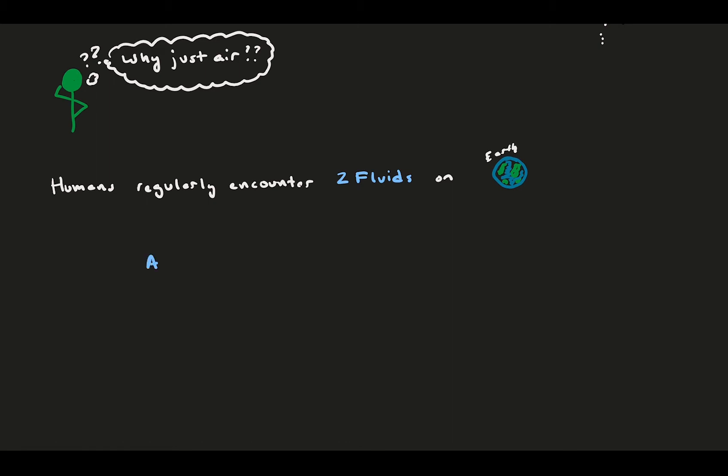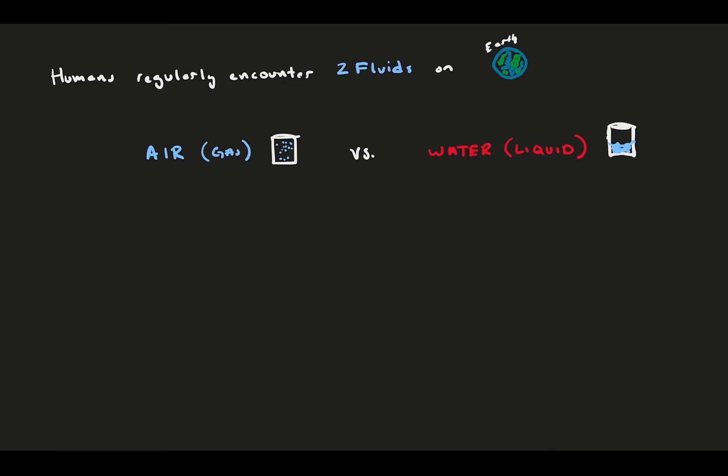Due to the composition of the planet, throughout history humans have learned to traverse through two major fluids. Air is the dominant gas, and the study of air is aerodynamics. Water is the dominant liquid, and the study of how water moves is hydrodynamics.